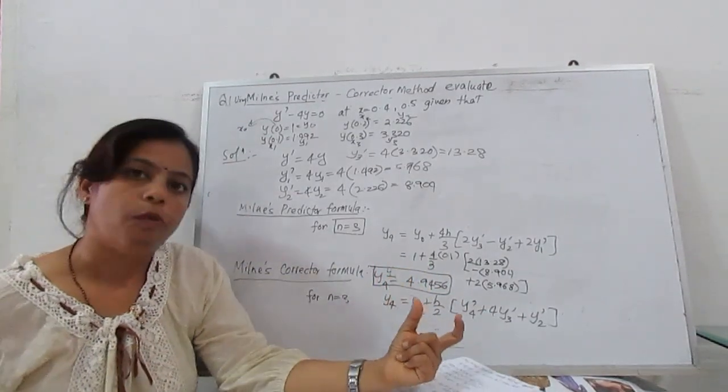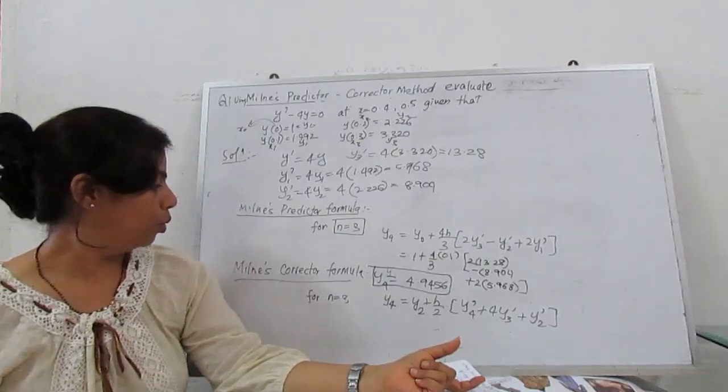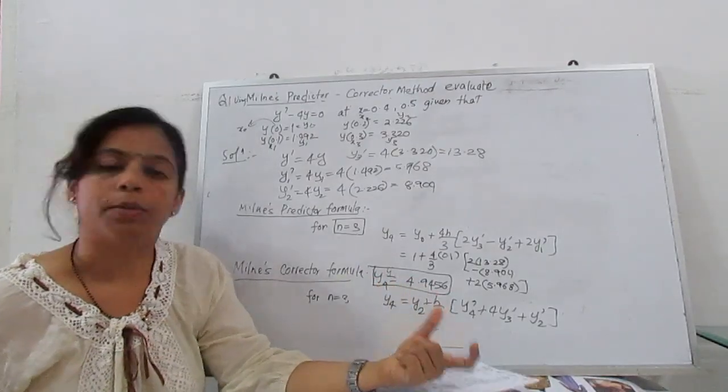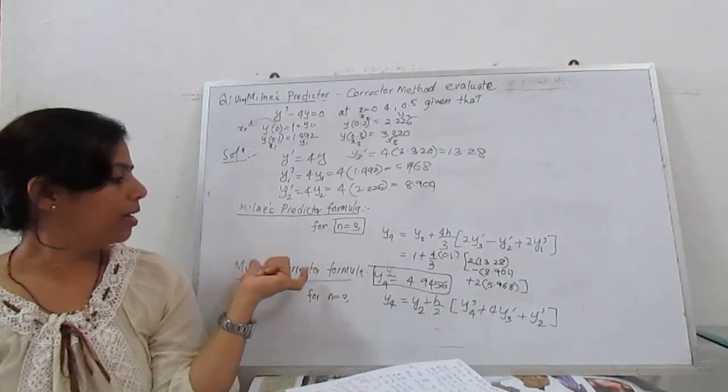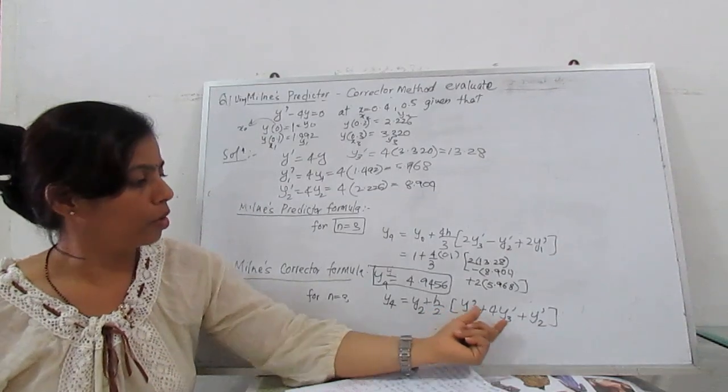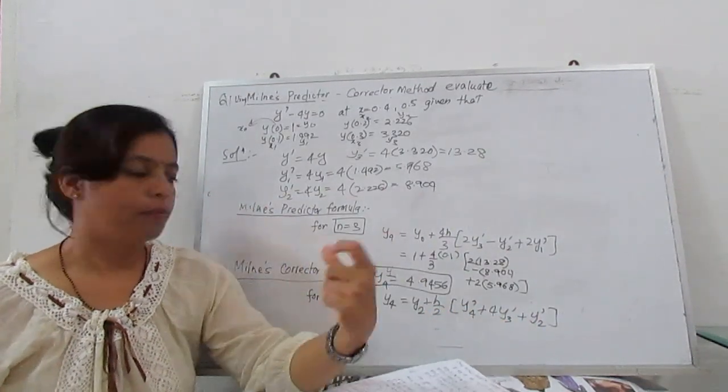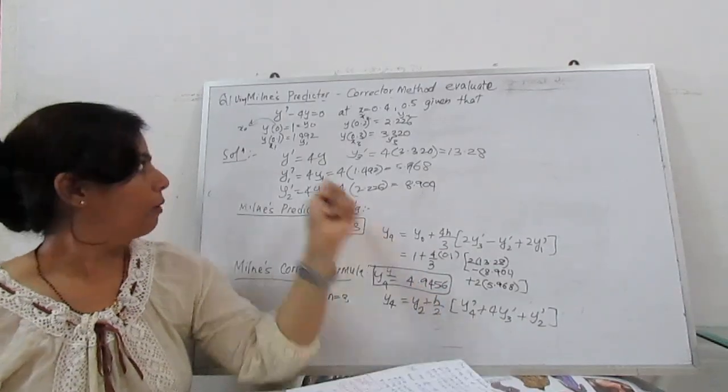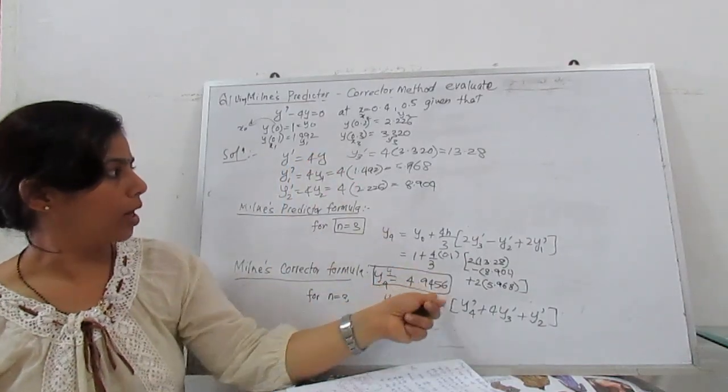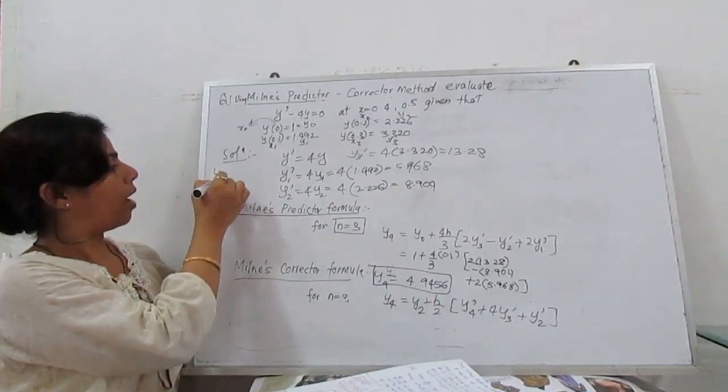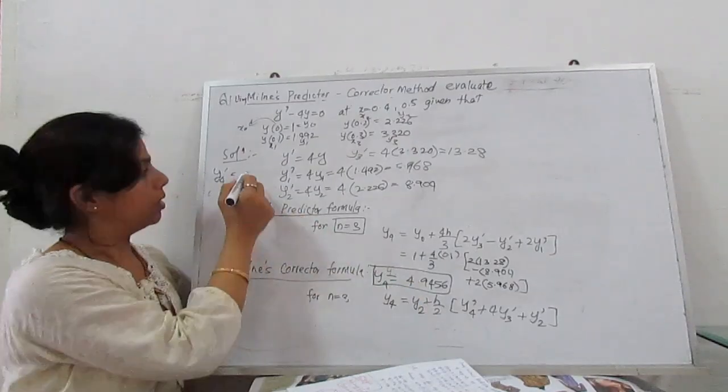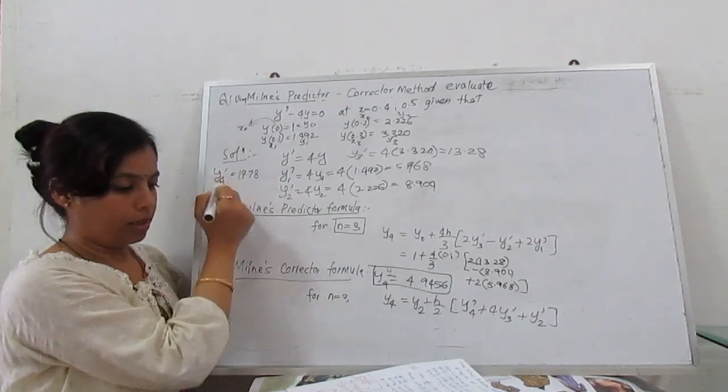Now what is the next step? We have to correct it with corrector formula, so we'll get a more accurate specified value. My corrector formula is y₄ = y₂ + (h/3)[y'₄ + 4y'₃ + y'₂]. First we have to calculate y'₄. y'₄ is 4 times y₄.